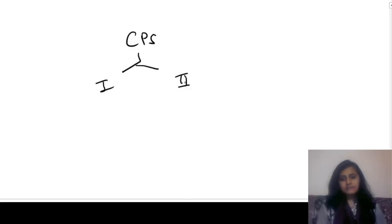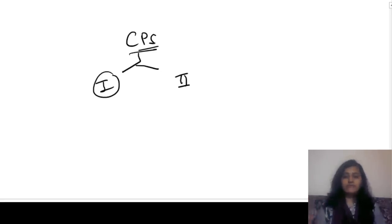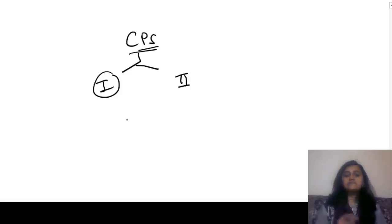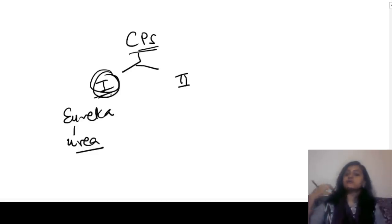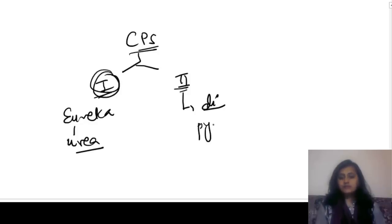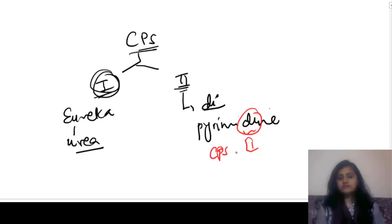Now where do you have CPS1 and CPS2 — carbamyl phosphate synthase 1 and 2? CPS is like a degree. Even if you get CPS, it's a Eureka moment. Eureka means urea, so CPS1 is for the urea cycle. CPS2 — 2 means 'di', and 'di' is seen in the word pyrimidine. So CPS2 is for pyrimidine synthesis.